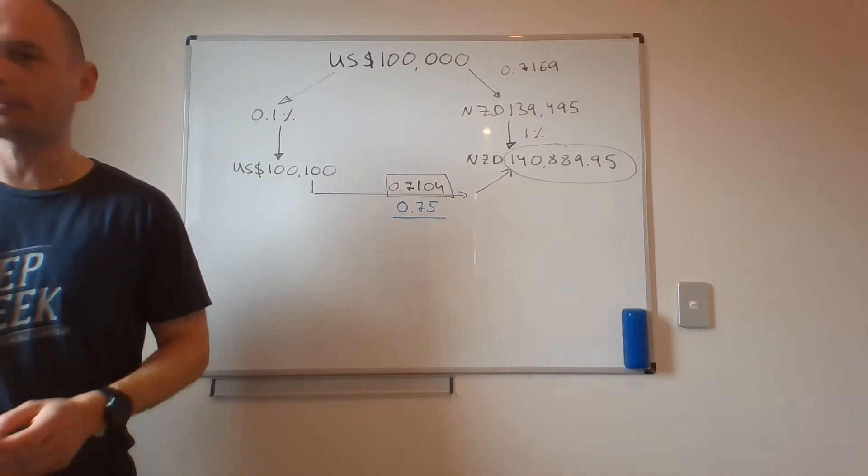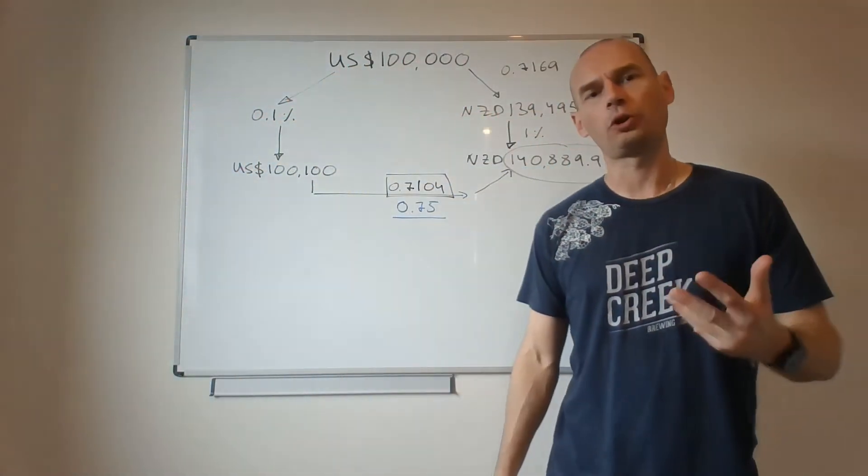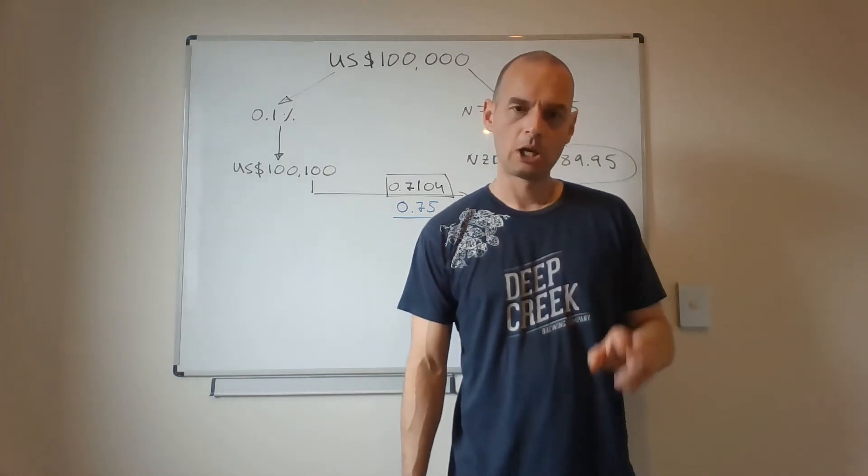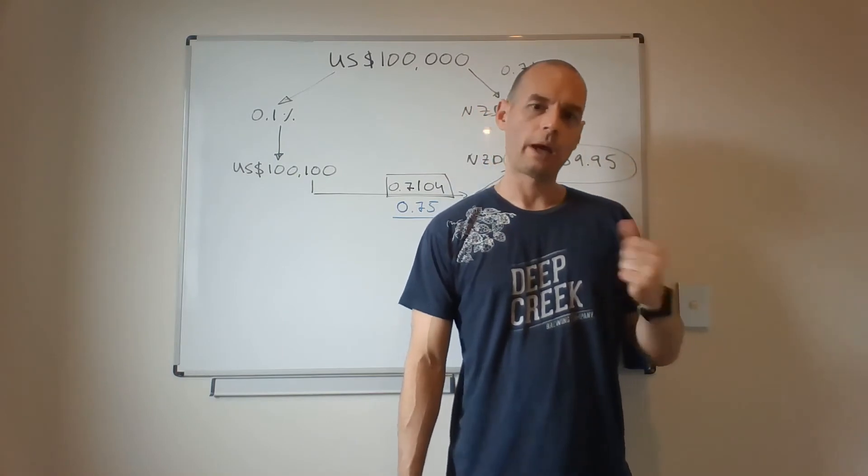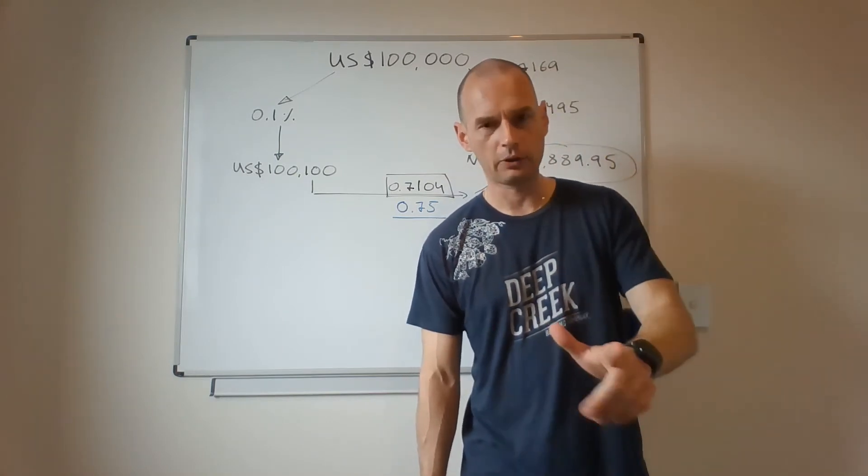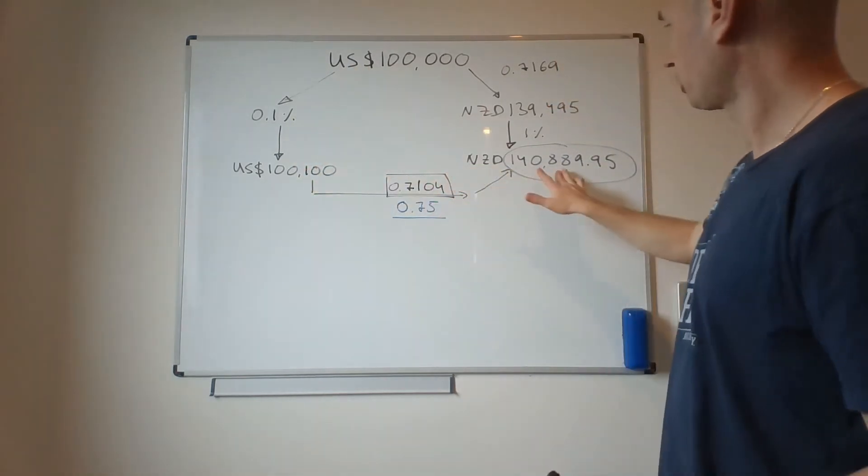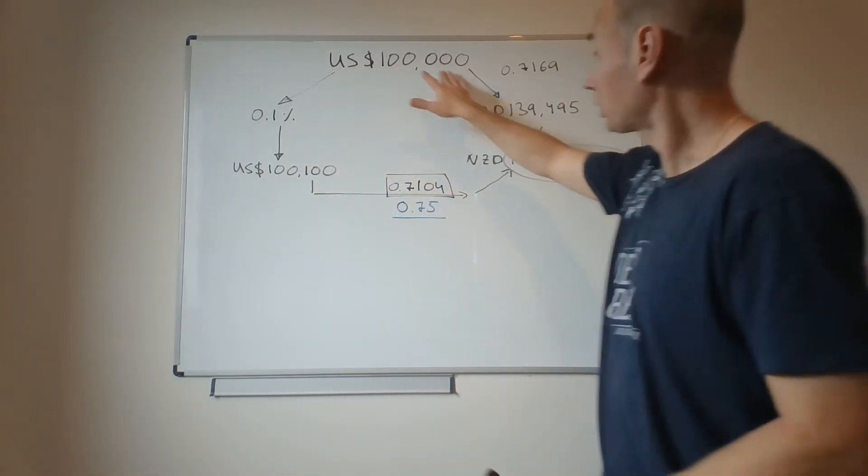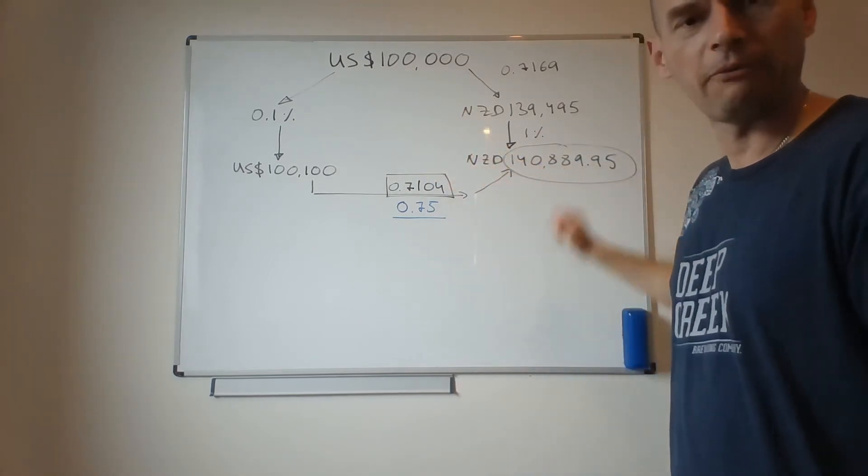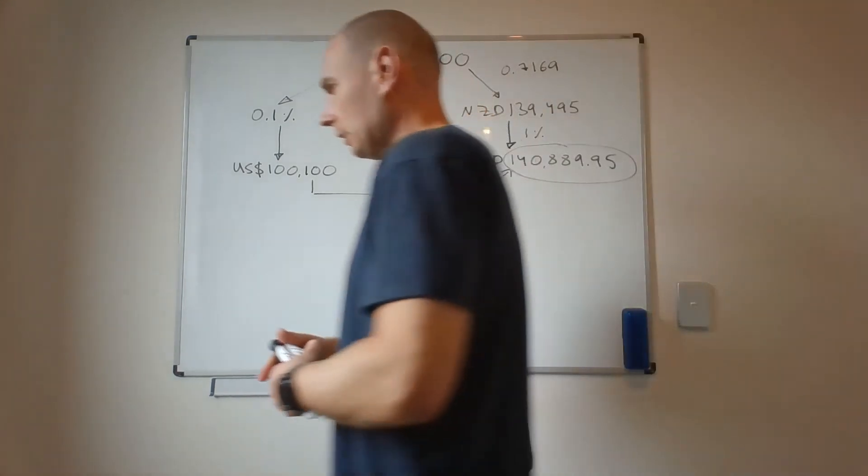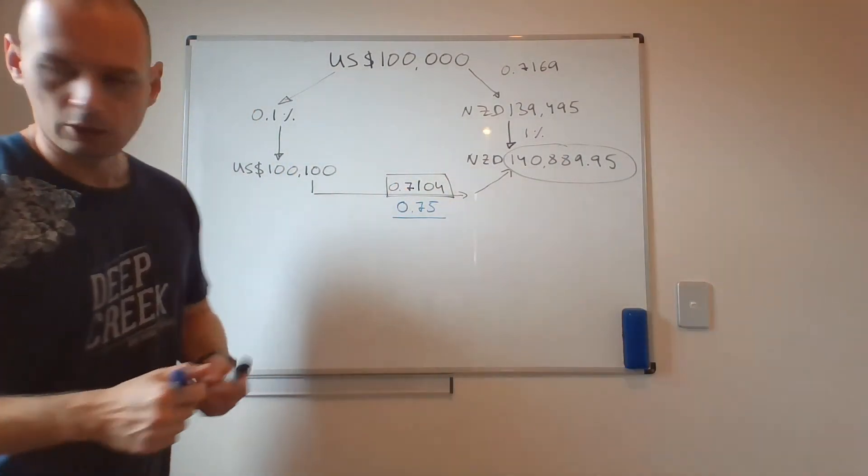In investments and in economics, we have a concept that is called the law of one price. If two assets are identical, they should cost the same. If two assets have the same risk, they should have the same return. So here we have two assets that should result in the same. They are the same asset. We start from the same starting point. We should end up at the same finish line. Now, let's say that this law of one price is violated. What will I do?